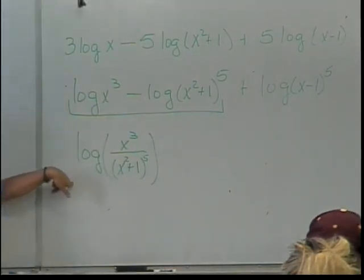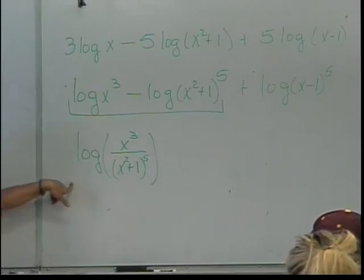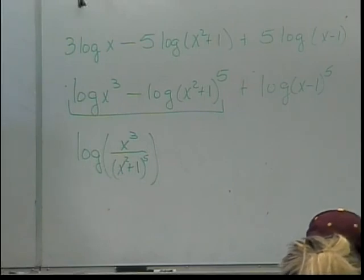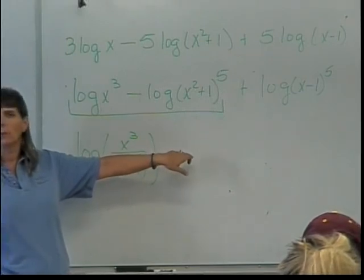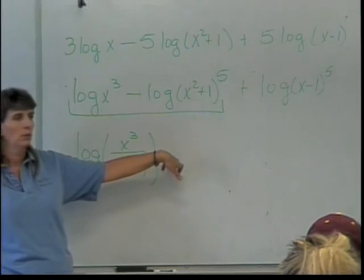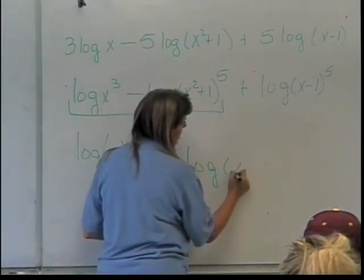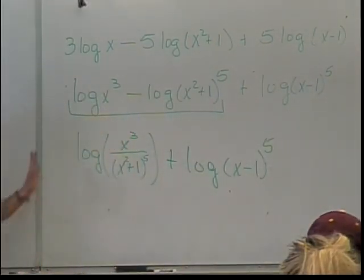Notice, only one logarithm. There's not a log on top and a log on bottom. That's one of the most common mistakes that people make. And what else am I missing? I've only taken care of these two pieces, and as you had written on your paper, things cannot disappear and reappear, so what do I need to put right here? Plus log of x minus 1 to the fifth. Now I know.